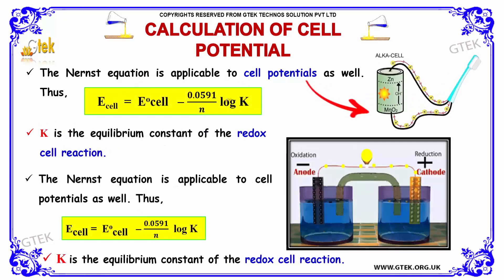The Nernst equation is applicable to cell potentials as well. Thus, Ecell = E°cell - (0.0591/n) log K, where K is the equilibrium constant of the redox cell reaction.